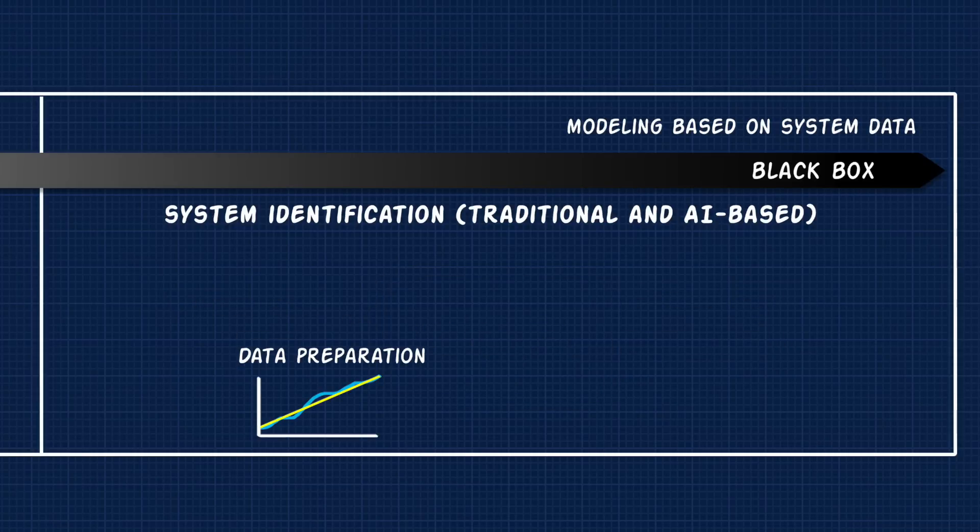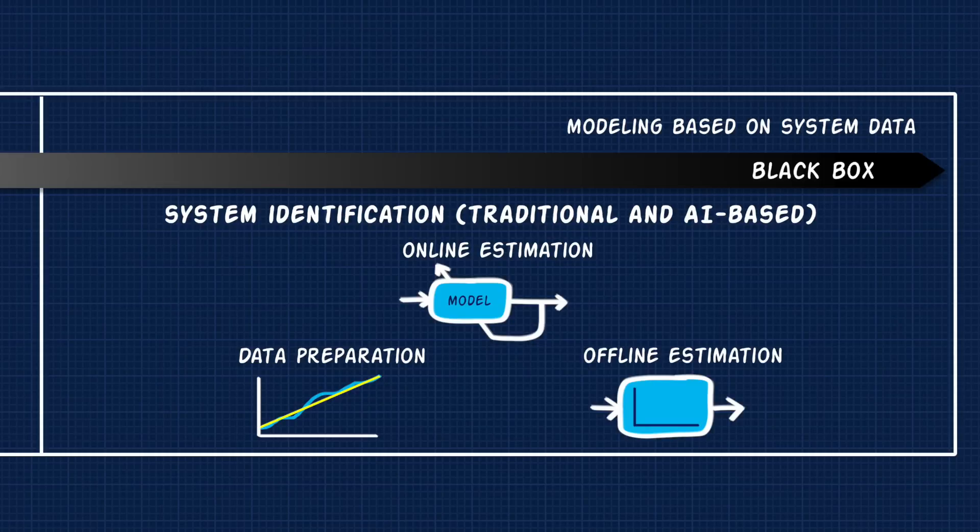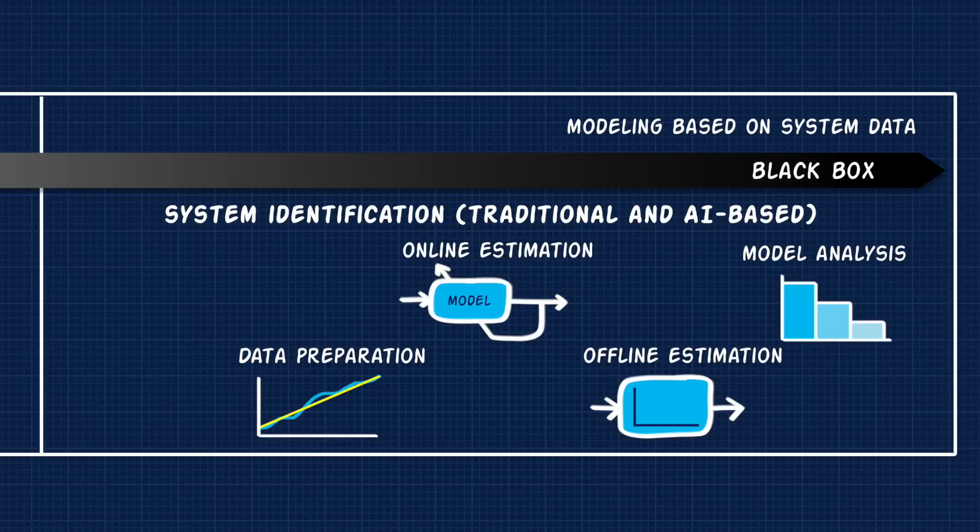Part of the system identification process is to prepare the data. These are things like removing outliers and dealing with missing data points. Then estimating the model can be done online, where the model is updated as new data is available, or offline, where the model is fit to a set of pre-recorded data. Finally, the model needs to be analyzed. How good of a fit is it to the training data and how well does that model match test data? Model analysis also allows you to figure out the best order and structure of the model that you're fitting. MATLAB has the system identification app that will help you through this process.